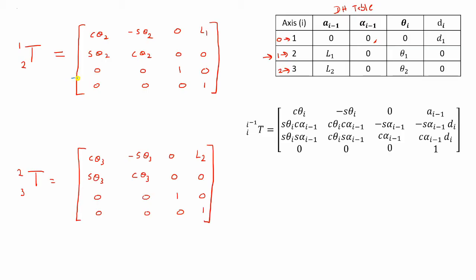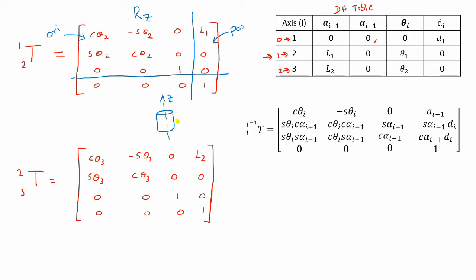If you take a look at this matrix, you'll see it's the same form we discussed in the first few videos. This section shows the position of the manipulator, while this 3×3 section shows the orientation. The 3×3 section is a rotation about the z-axis, which makes sense because the second joint was a revolute joint with its axis running in the z direction. For the first joint, it was a prismatic joint, so you don't have that same rotational form.